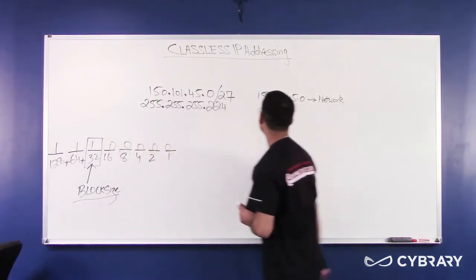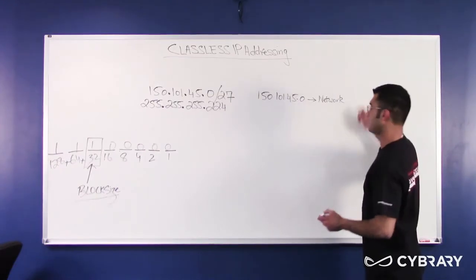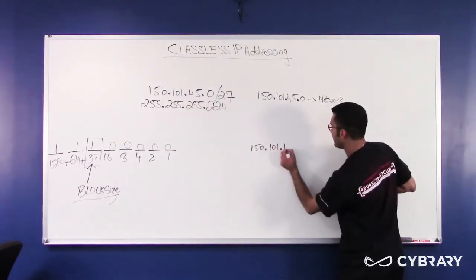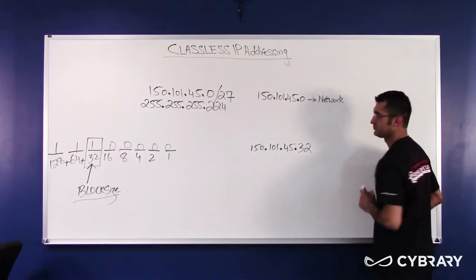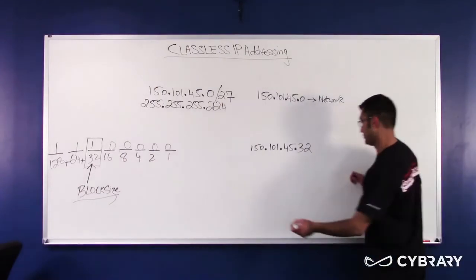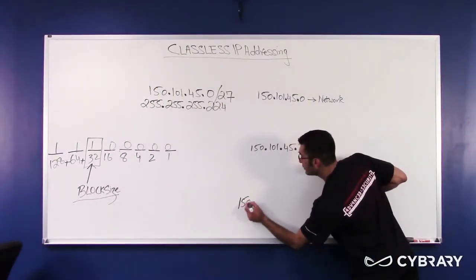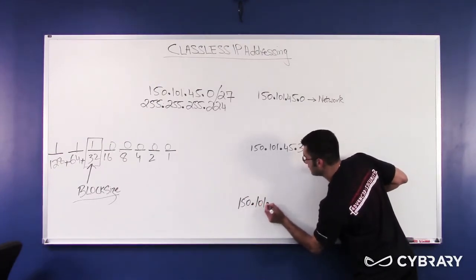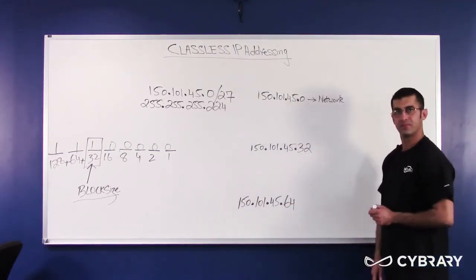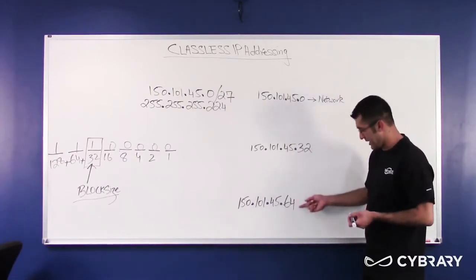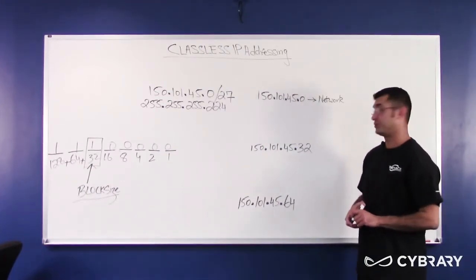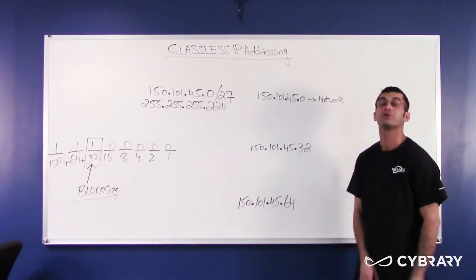That simply means that if this is my first street, or my first network, my next street starts at 150, 101, dot 45, dot 32. I just added 32 to 0. My next street would start at 150, dot 101, dot 45, dot 64. And I would keep adding 32. How did I get 64? I added 32 again, and I got 64. If I add 32 again, if I had space, the next network, or the next street, would start at 96, and so on and so forth, all the way till 255.